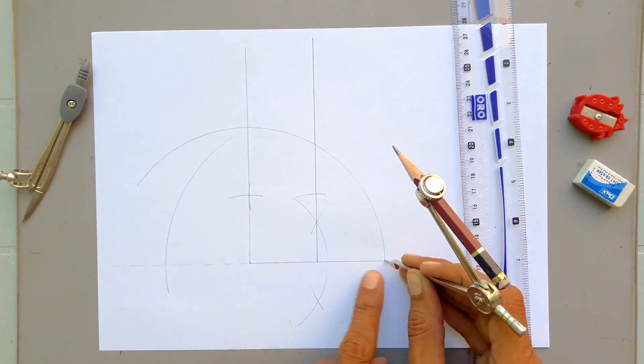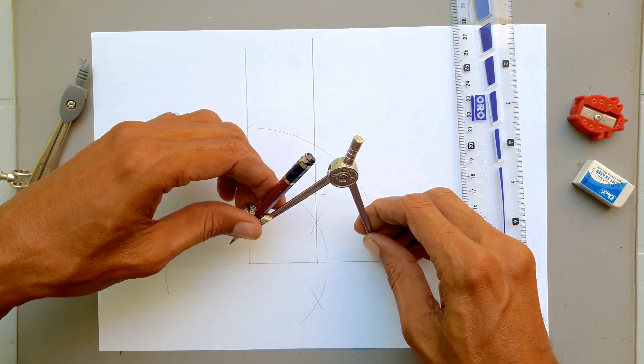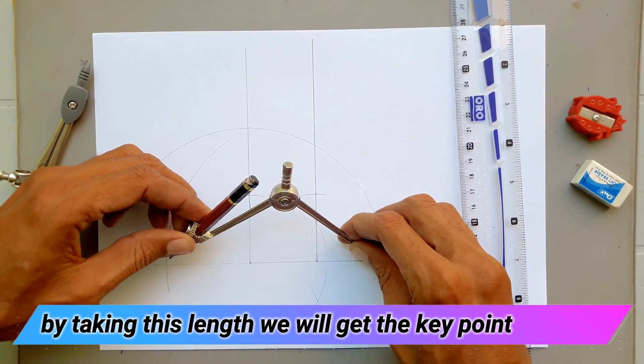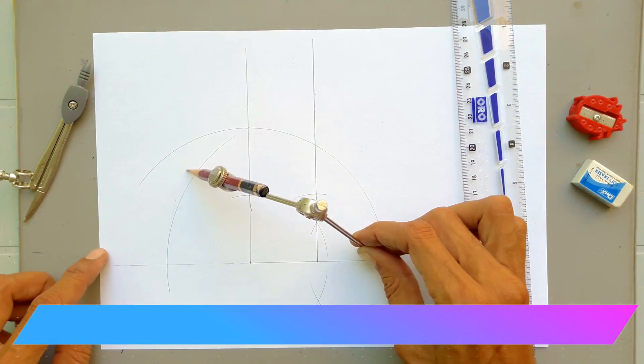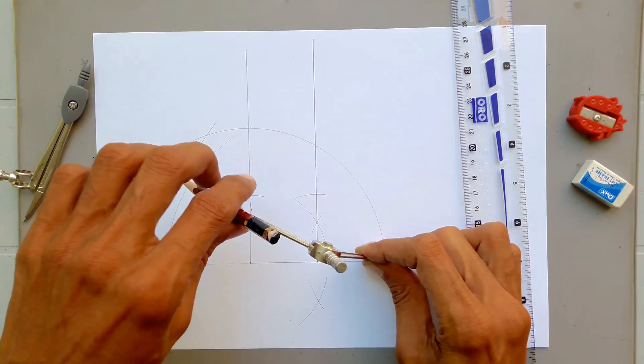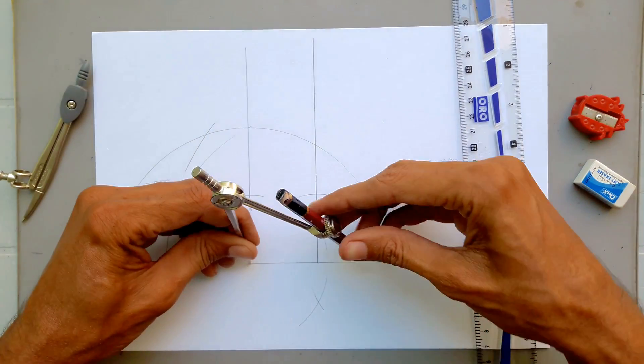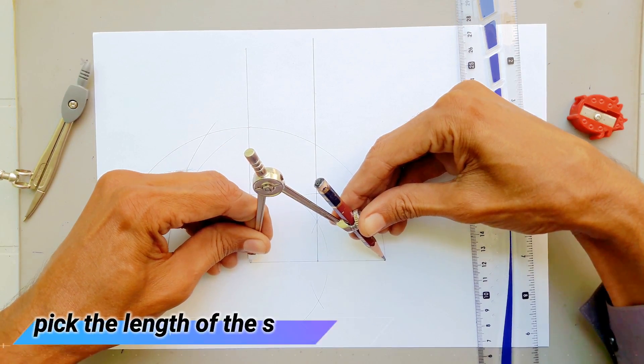Now draw an arc to get the key point. Now pick the length of the side and get the remaining points for pentagon.